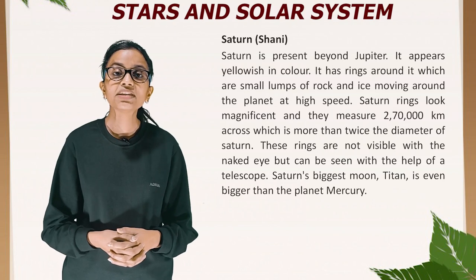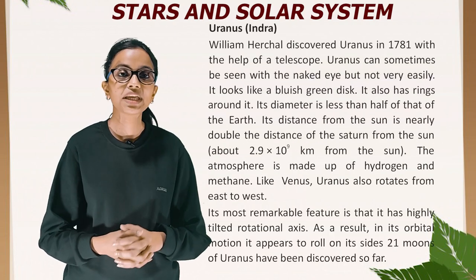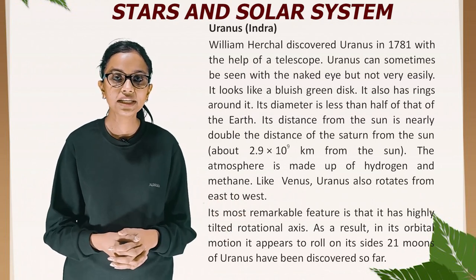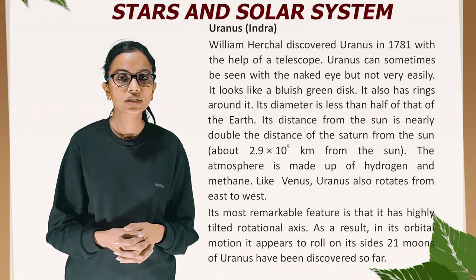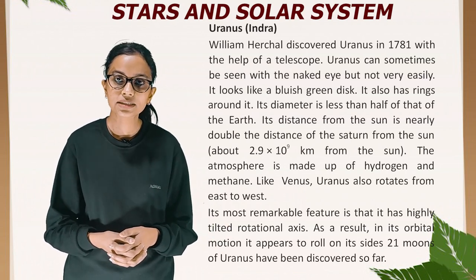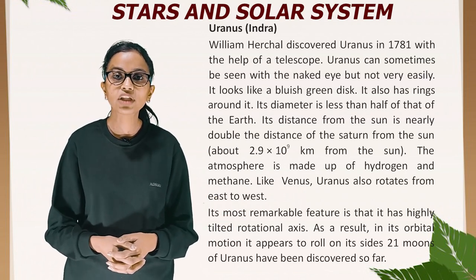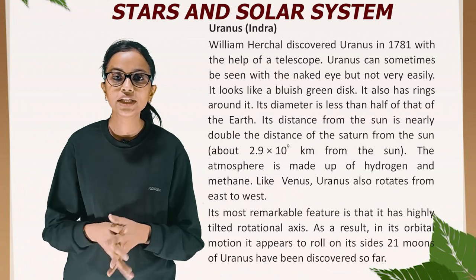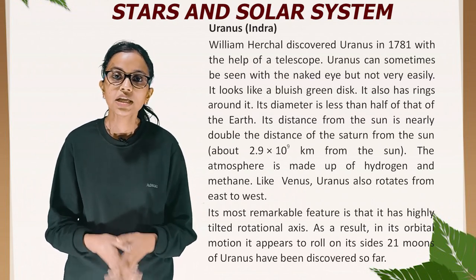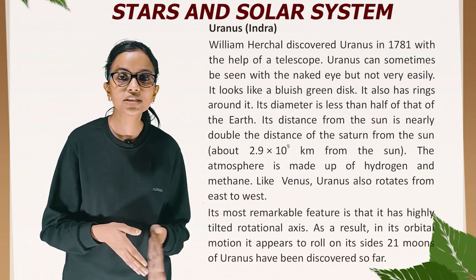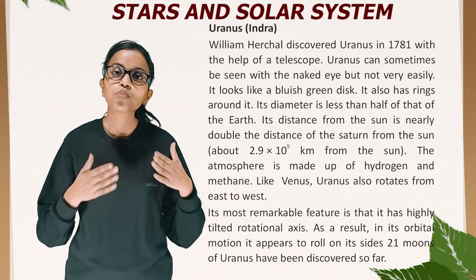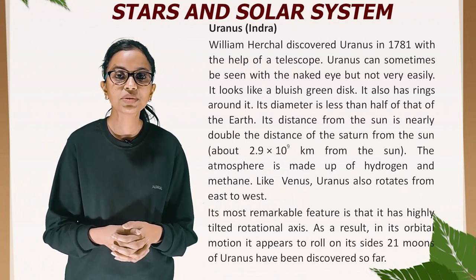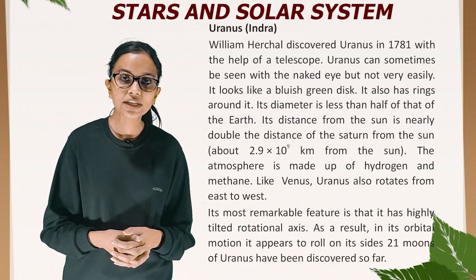Saturn's biggest moon, Titan, is even bigger than the planet Mercury. Uranus was discovered by William Herschel in 1781 with the help of a telescope. Uranus can sometimes be seen with the naked eye but not very easily; it looks like a bluish-green disk and also has rings around it. Its distance from the Sun is nearly double the distance of Saturn from the Sun — about 2.9 × 10⁹ km. Its atmosphere is made up of hydrogen and methane. Like Venus, Uranus also rotates from east to west. Its most remarkable feature is its highly tilted rotational axis, making it appear to roll on its side. 21 moons of Uranus have been discovered so far.